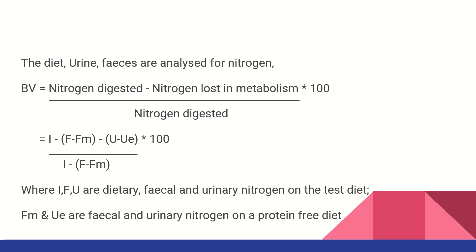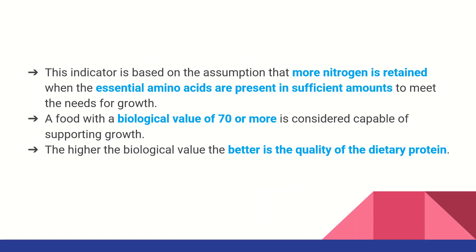This is the biological value. More nitrogen is retained when the essential amino acids are present in sufficient amounts to meet the needs for growth. If the biological value is 70% or above, that is a good protein — sufficient for growth and maintenance of body tissues.